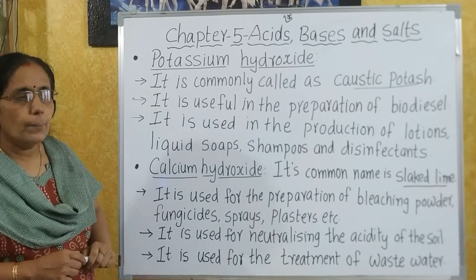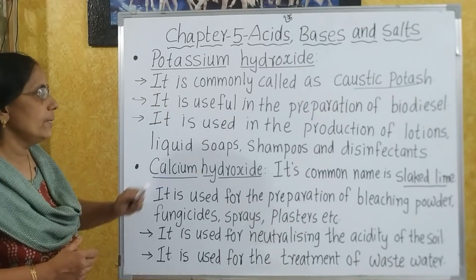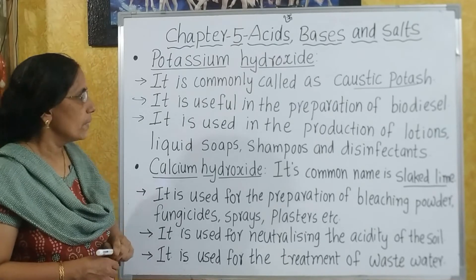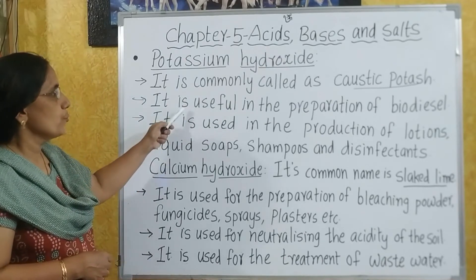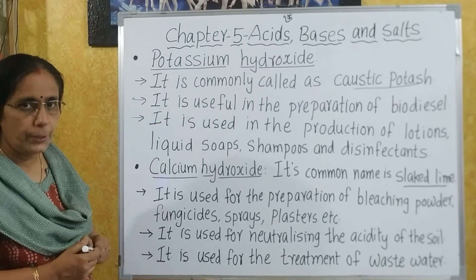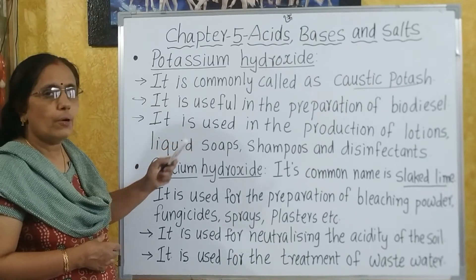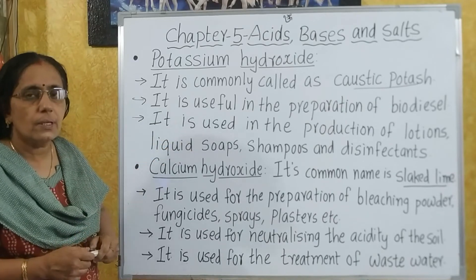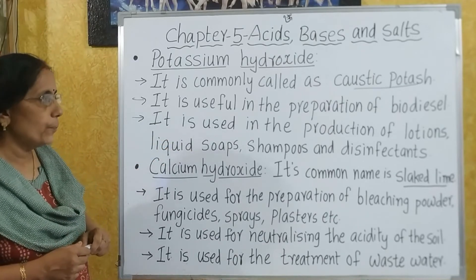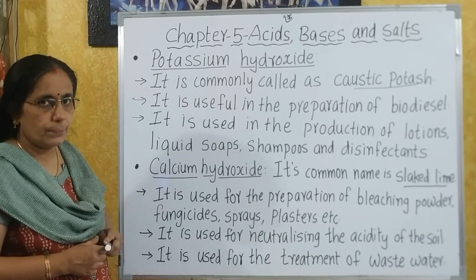Now we will see the uses of potassium hydroxide. Potassium hydroxide is commonly called caustic potash. It is useful in the preparation of biodiesel. It is also used in the production of lotions, liquid soap, shampoos, and also in disinfectants.